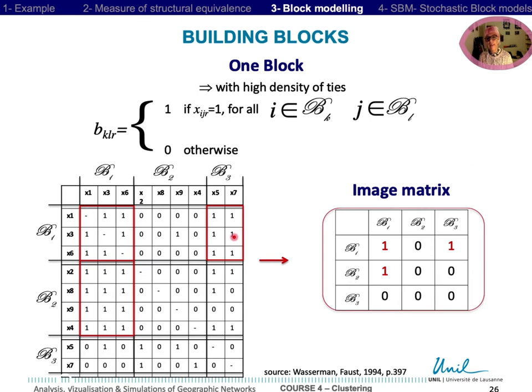Note that in the case of a block is totally connected with himself like B1, it corresponds to a complete subgraph or a clique.